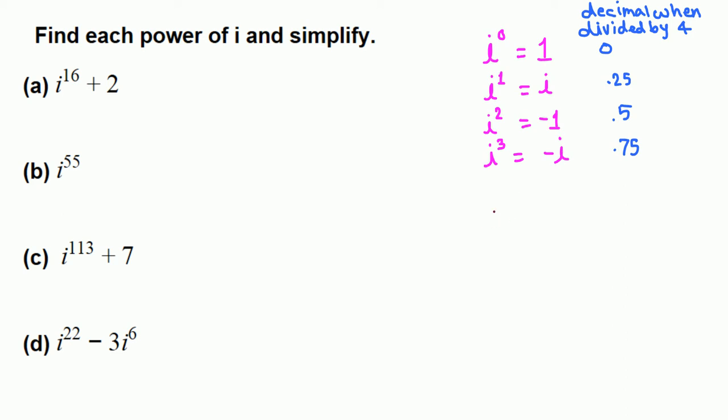If we want to find i^4, all we have to do is divide this exponent by 4 and look at the decimal expression, which is equivalent to the remainder. When we divide 4 by 4, it goes 1 time with no remainder, so remainder 0. Remainder 0 refers to the first power, so i^4 will be 1.